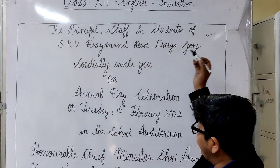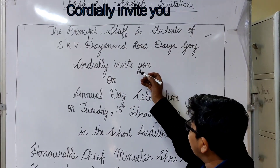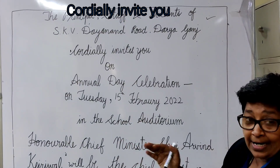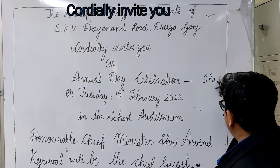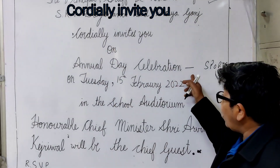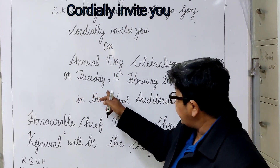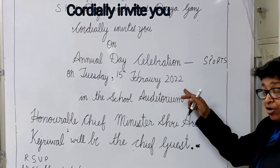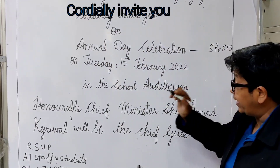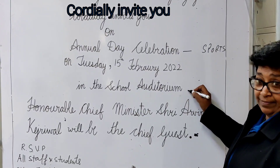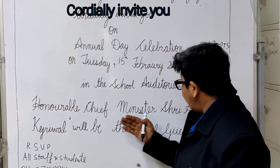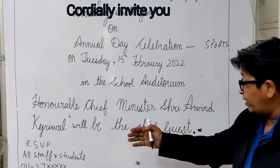You will add the name of your school and write 'cordially invite you' followed by the occasion — for example, 'Whole Day Celebration.' If it is sports day, you can type 'Sports Day' but it should be clear. Then: when — on Tuesday, 15th February 2022. And then: 'Honourable Chief Minister Shri Arvind Kejriwal will be the Chief Guest.'